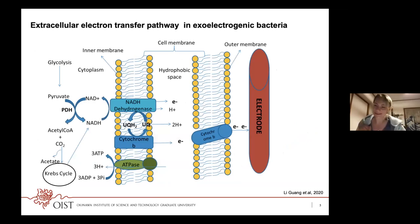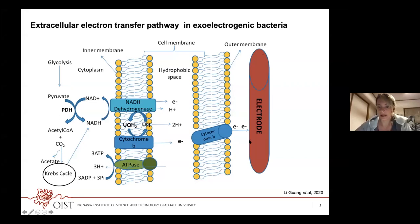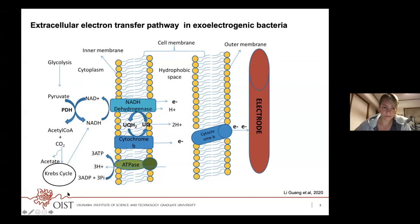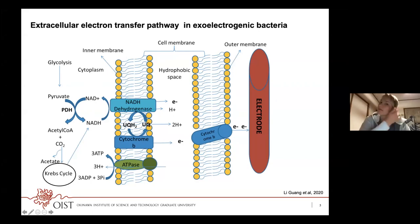Going deeper into detail, here you can see a schematic view of how the electrode and bacteria transfer electrons extracellularly. On the left, organic conversion occurs via the TCA cycle and the energy is released. Electrons then move through NADH dehydrogenase and several steps of cytochromes through the cell membrane out to the electrode surface.